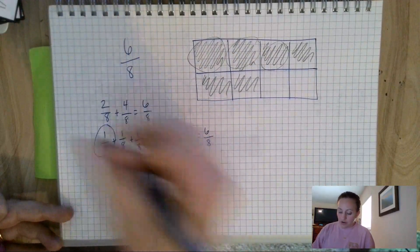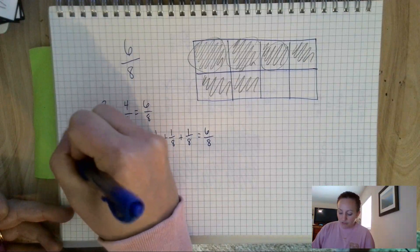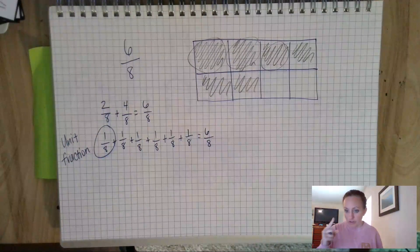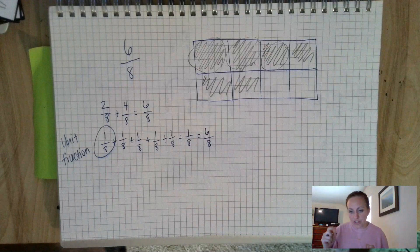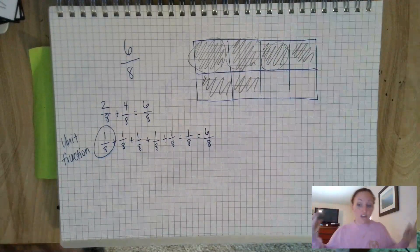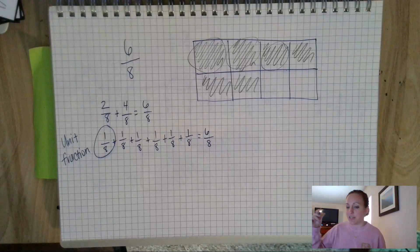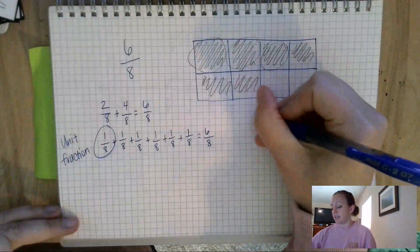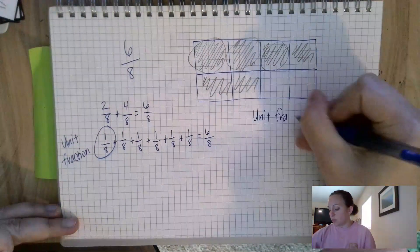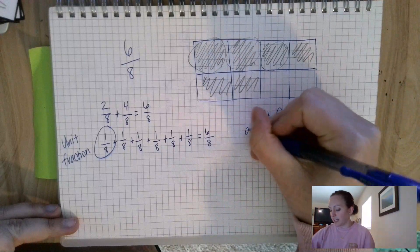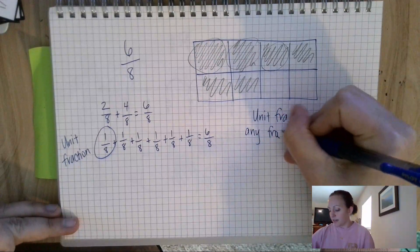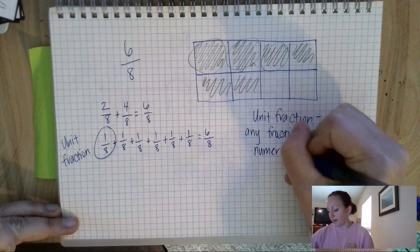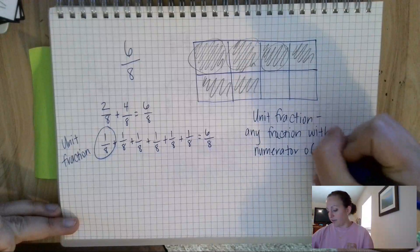These fractions with a 1 as the numerator are called unit fractions. Unit fractions are any fraction that has a 1 as the numerator — 1 half, 1 third, 1 fourth, 1 fifth, 1 sixth, 1 seventh, 1 eighth, 1 ninth, even 1 over 557. It doesn't matter what the denominator is — if the numerator is a 1, it's called a unit fraction. That's a good vocabulary word to know, because you will see it.